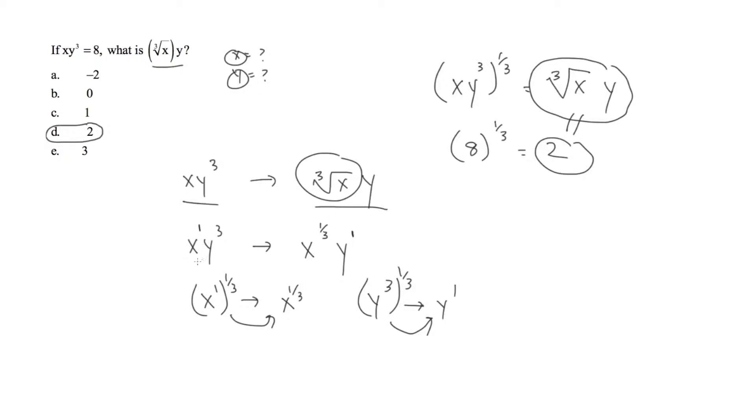What you want to do is keep everything they give you together and simply find relationships between this x, this x to the one-third, also this y cubed with this y to the 1 power. That's basically what's going on here.